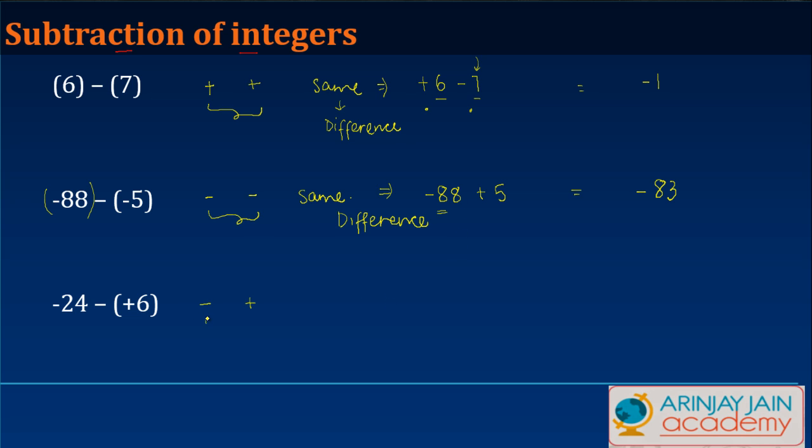But what happens when the signs are different? In these cases when the signs are different, you simply just add the two numbers. So you get something like -24, and then minus plus gives you minus. You add the two numbers, which is 30 in our case, and give the sign which remains, which is minus.